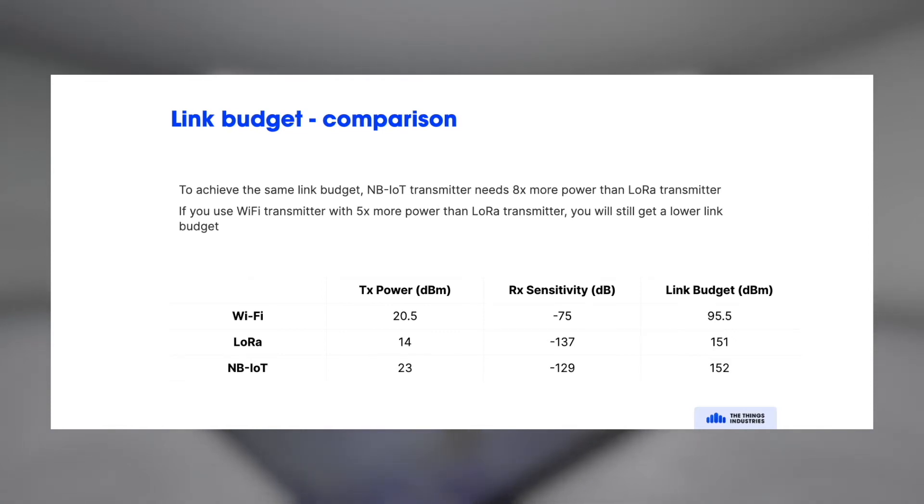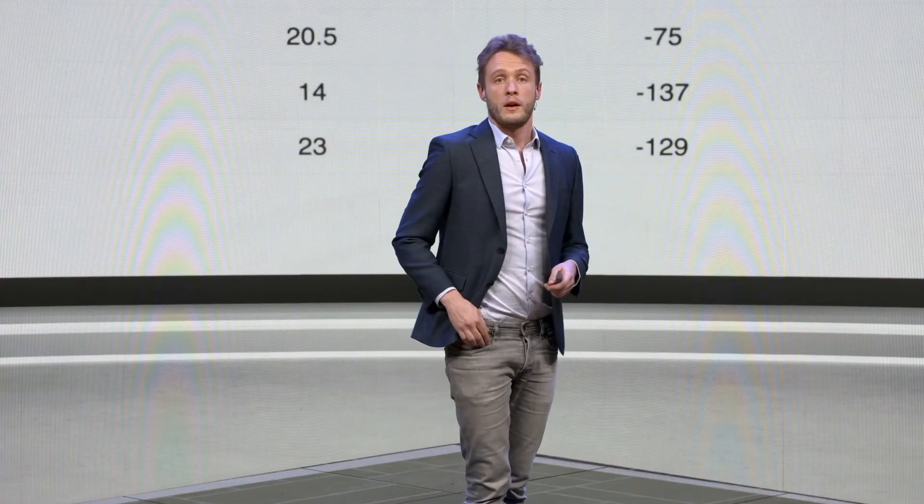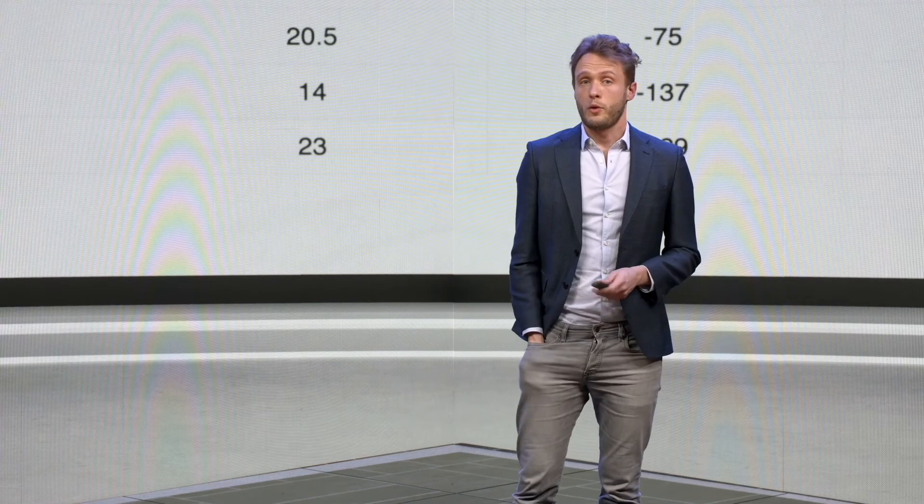LoRa is 151, and you can do the same calculation for narrowband IoT, which is a cellular IoT technology, which has a similar link budget. But you see here also that LoRa reaches a similar link budget, 151, with much less transmit power. And this is a logarithmic scale. It's in fact eight times more power for narrowband IoT, eight times more power to get the same link budget than with LoRa. And that also makes LoRa, just from a physics standpoint, much, much better for battery life.